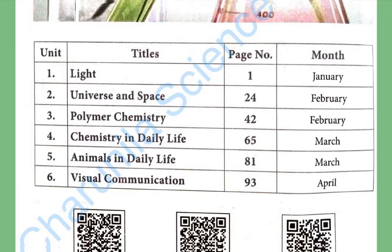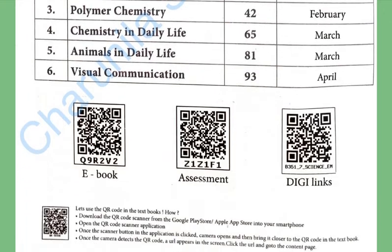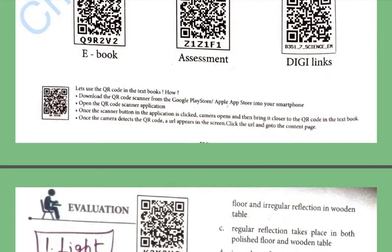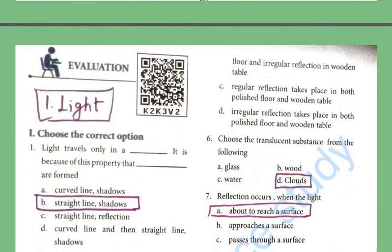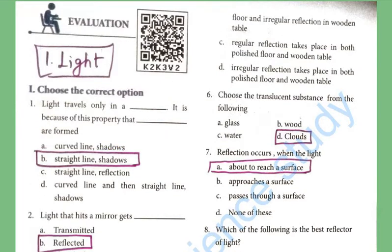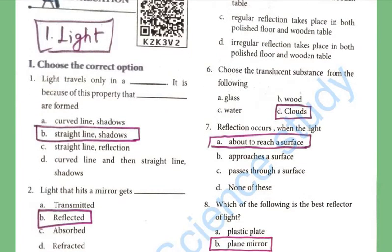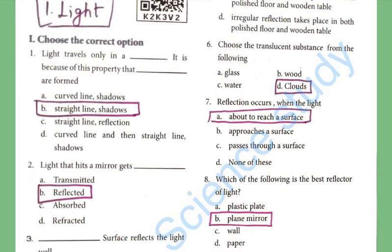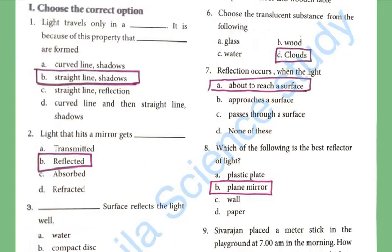Let's start with the first lesson: Light. Choose the correct answer. Light travels only in a straight line — because the property of that straight line is shadows are formed. Light that hits a mirror gets reflected — the answer is reflected.